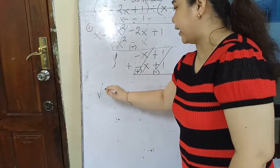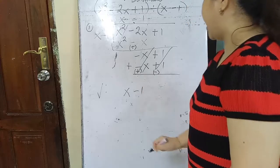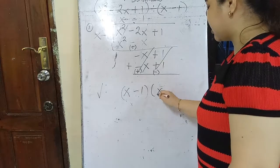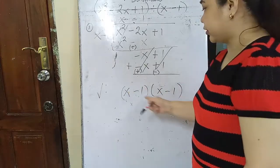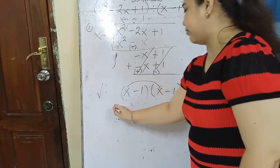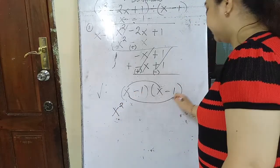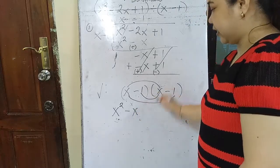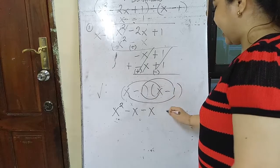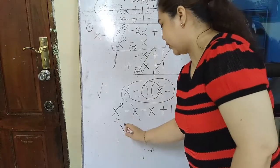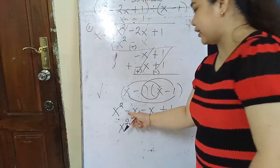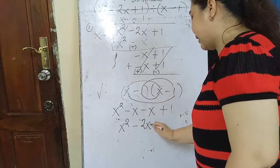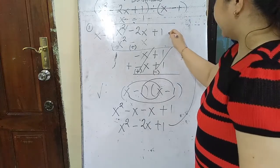Let's check: x minus 1 times x minus 1. Using the FOIL method: x squared, then outer negative x, then inner negative x, and last positive 1. So x squared minus x minus x plus 1 is x² minus 2x plus 1 — which matches the original.